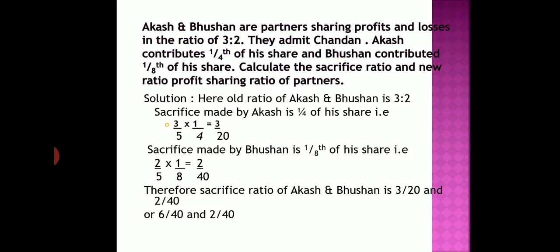The next step: we need to calculate the sacrifice made by Bhushan. As per the question, he is contributing one eighth of his share. Bhushan's share is 2 by 5, and he is contributing 1 by 8, so 2/5 × 1/8 equals 2 by 40. The sacrifice ratio of Akash and Bhushan is 3 by 20 and 2 by 40. Making the denominators equal, it will be 6 by 40 and 2 by 40. The first step is over — we have calculated the sacrifice ratio.